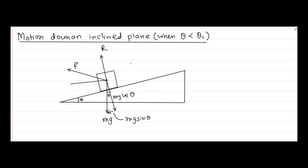So we have the component of F parallel to the inclined plane and a component perpendicular to the inclined plane. If this angle is alpha, the perpendicular component is F sin alpha and the parallel component is F cos alpha. We now have all the forces and will take equilibrium along the x-axis and y-axis, assuming the block is on the verge of moving down and is in equilibrium.